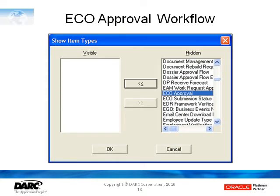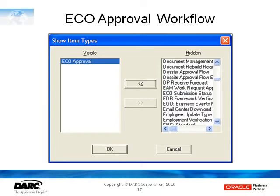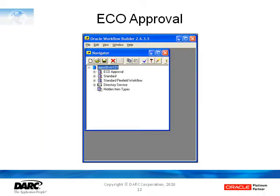Workflow Builder then opens up and shows us all the workflow processes in the database. This is a big long list, so we'll type E to get down to the workflow processes that start with E. Then we'll select the ECO Approval, click the double arrows to the left, which will move the ECO Approval workflow into the visible column. Then we'll click the OK button and now we have the ECO Approval workflow loaded into Workflow Builder.